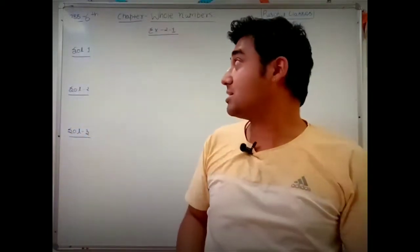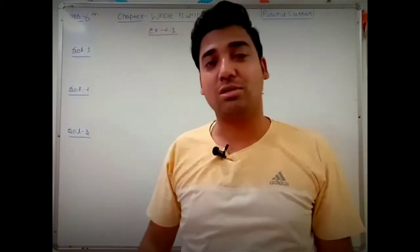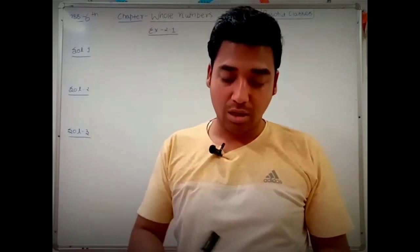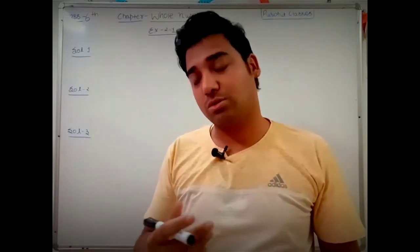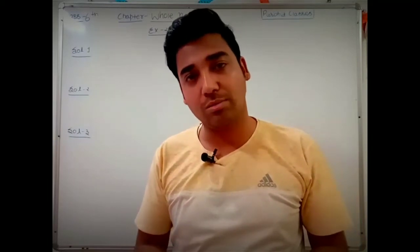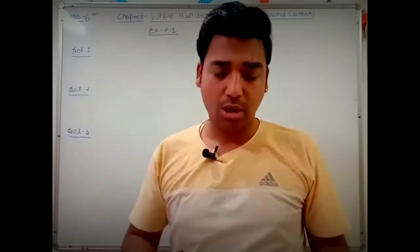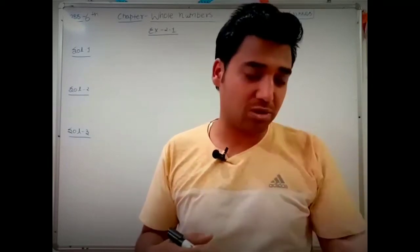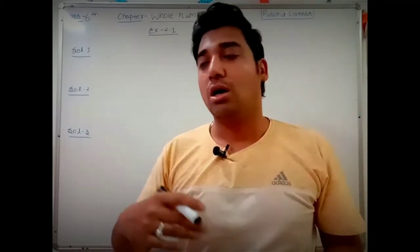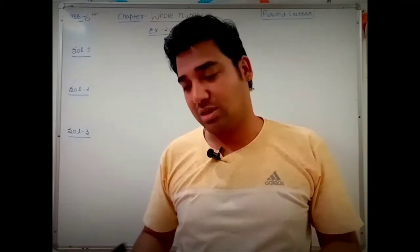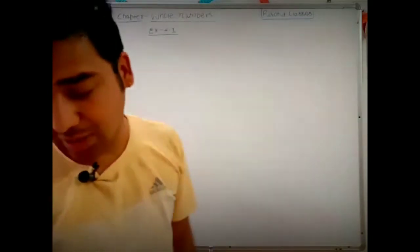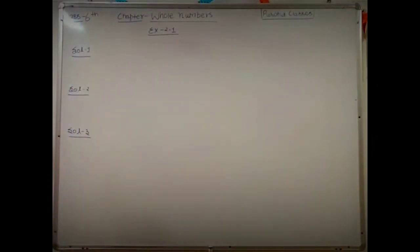Welcome back, Class 6. Today we are going to understand Exercise 2.1 of Mathematics. In our previous video we understood natural numbers, whole numbers, predecessor and successor, and questions like which is the smallest whole number and what whole number whose predecessor is not possible. Now let us start Exercise 2.1, Question Number 1.